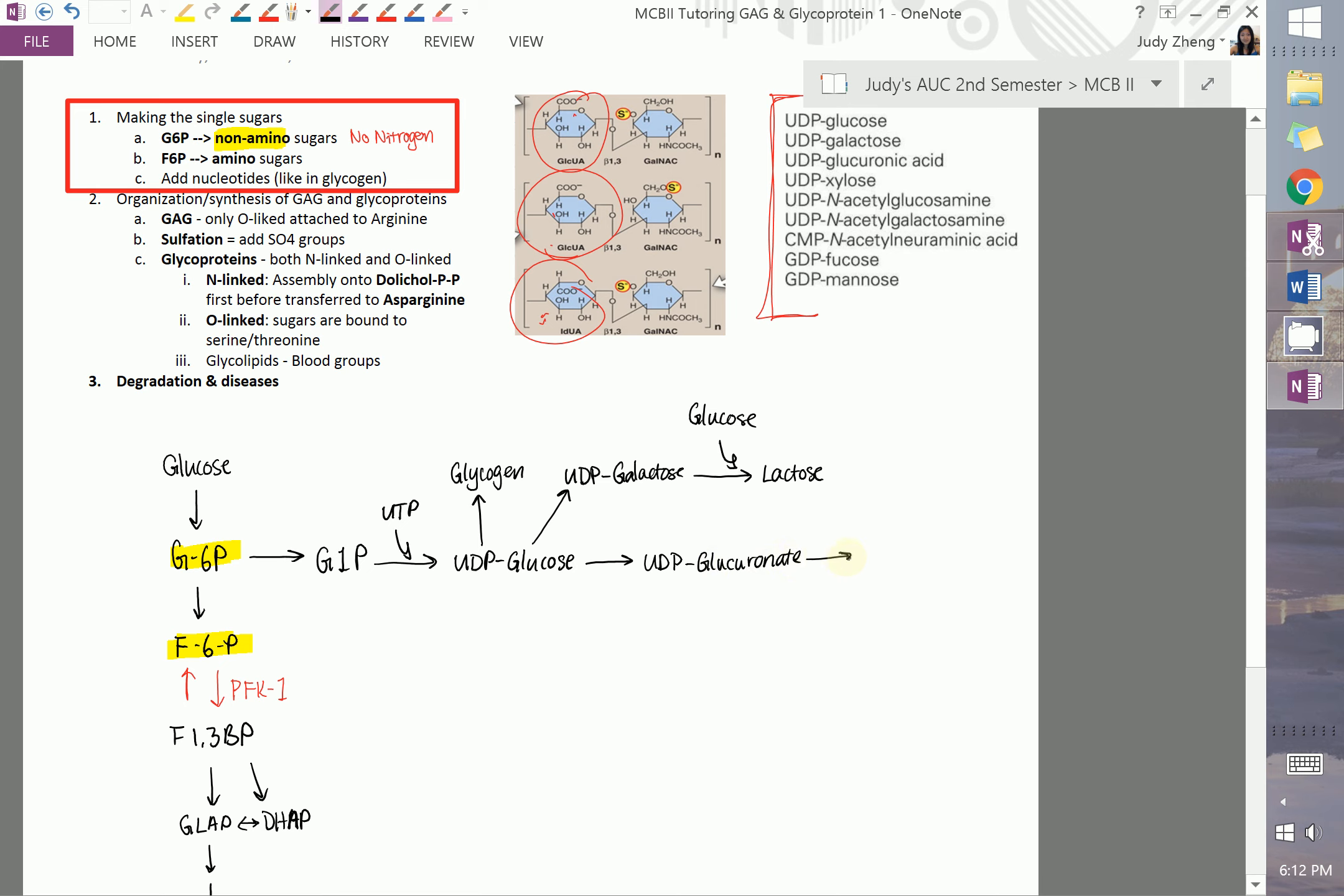Another important thing to note here is that UDP-glucose can be changed to UDP-glucuronate. And from glucuronate, UDP-glucuronate, it can be changed to glucuronate. Notice here, it has to be in the form of the UDP-glucose changing to UDP-glucuronate. It cannot be done directly through glucose. Same thing with galactose. So glucose can be indirectly made into galactose, but it has to be in the form of UDP-glucose changing to UDP-galactose. So all of these do not have the nitrogen.